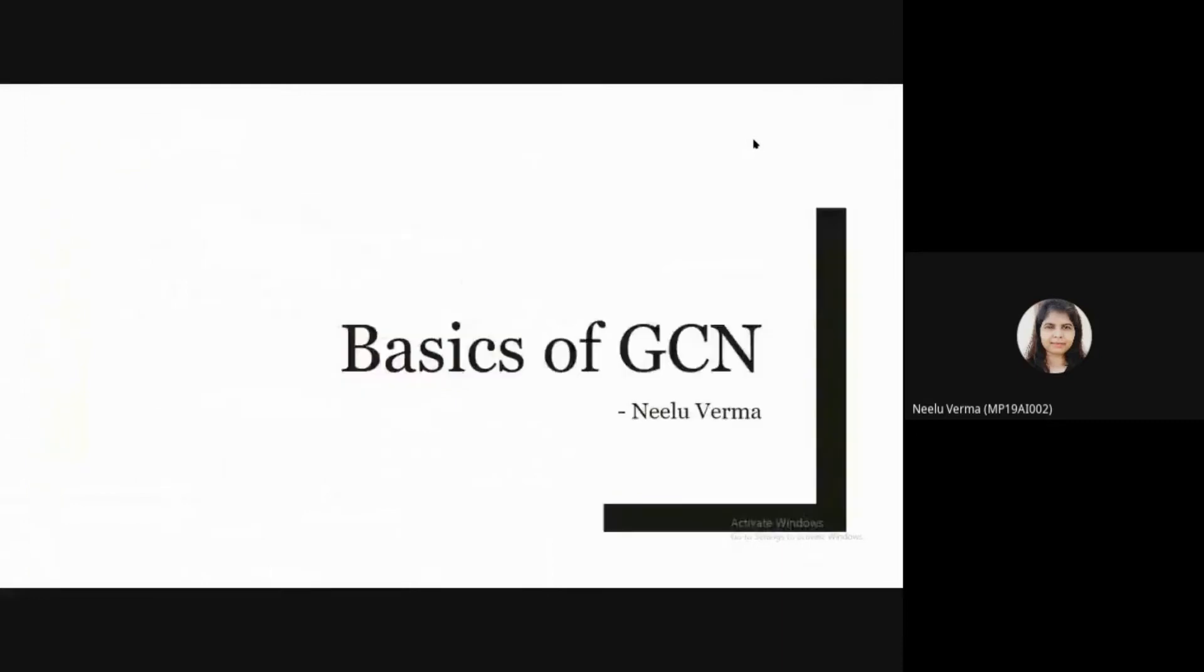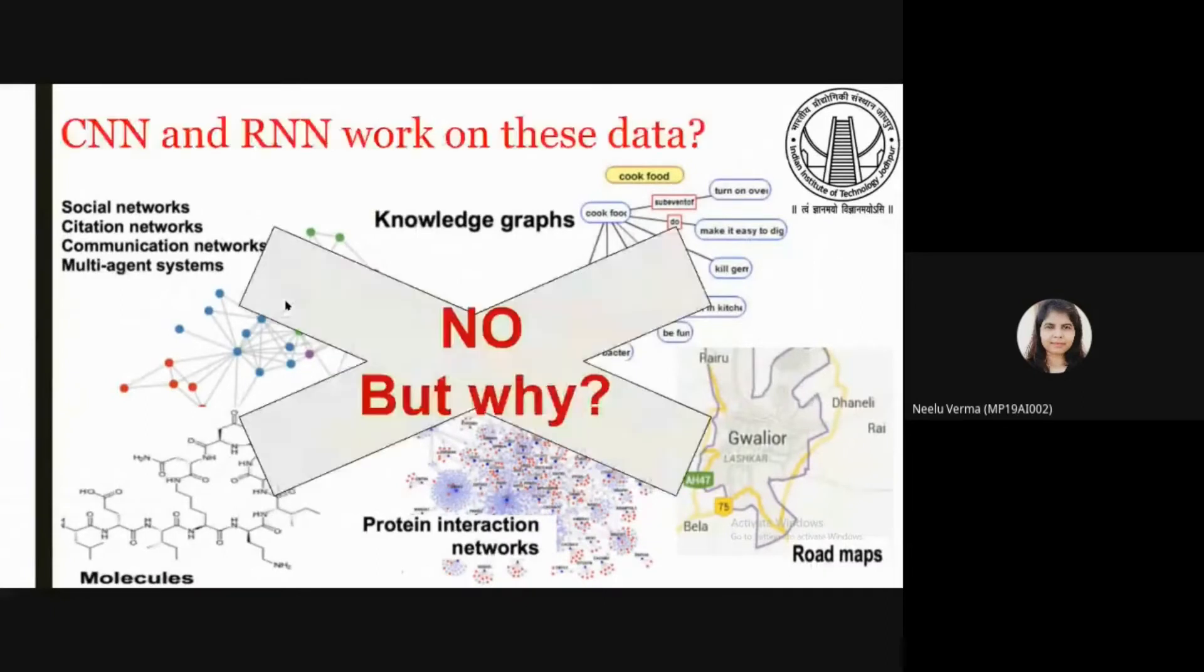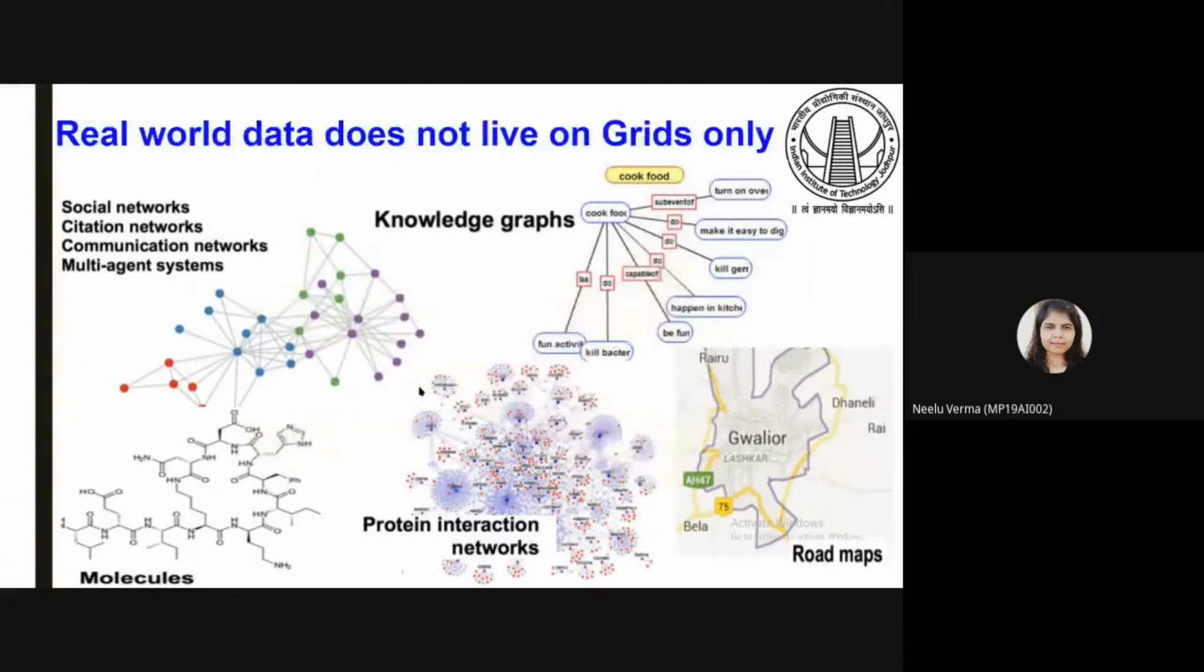Let's start with basics of GCN. Real world data like these does not depend on grids. So CNN and RNN do not work on this kind of data because real world data does not live on grids only.